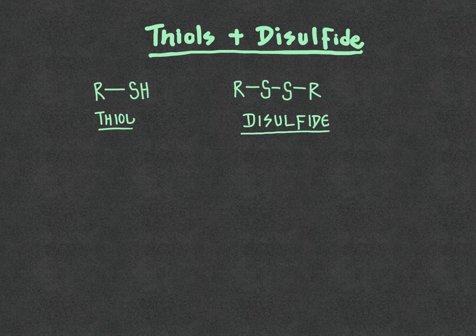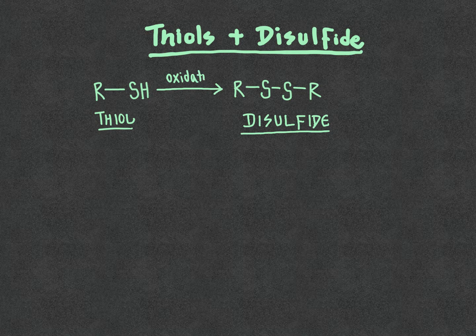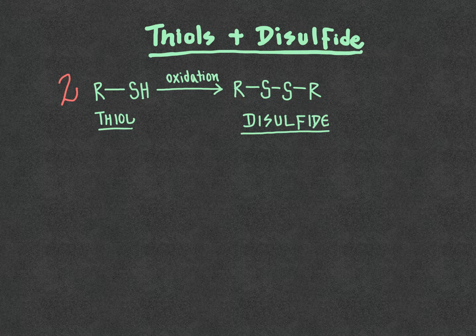The relationship between these two structures is that the thiol is reduced relative to the disulfide. So in other words, to go from one to the other would require oxidation. We refer to this as an oxidation reaction because we're increasing the number of bonds between carbon and sulfur going from reactant to product. To balance this equation, we need two thiol molecules coming together, where half of the disulfide comes from one thiol molecule and the other half from the other.